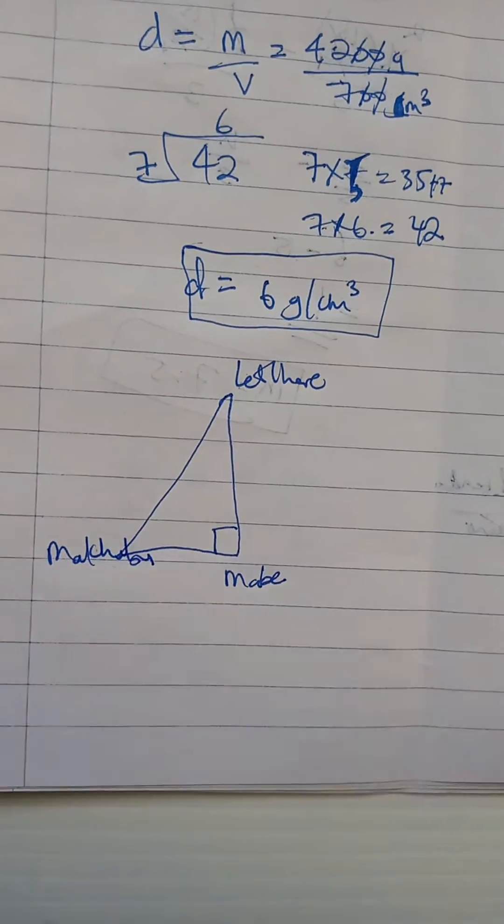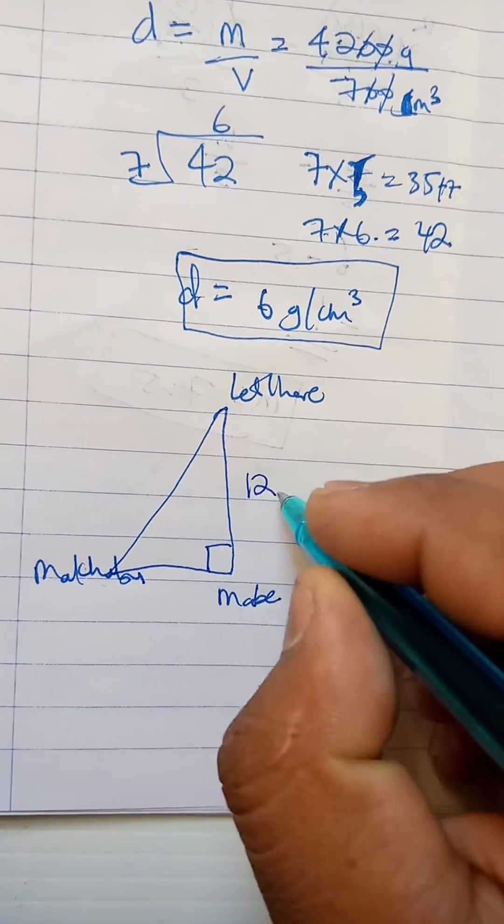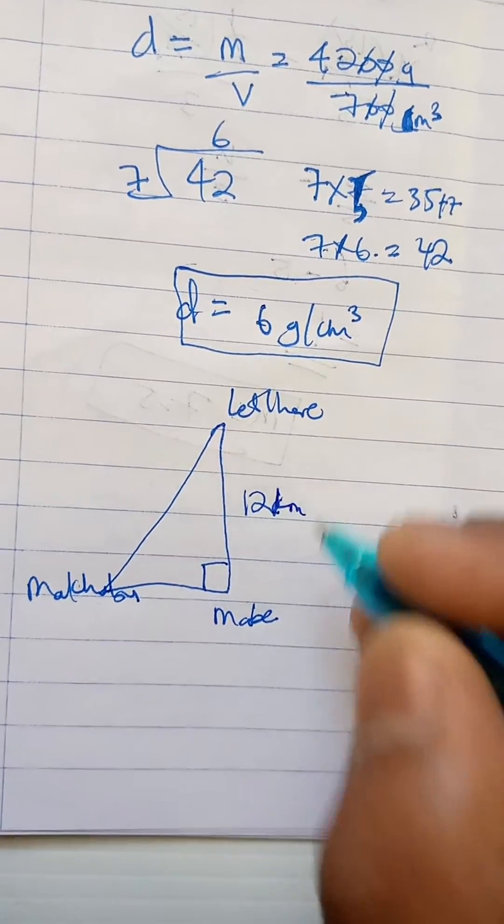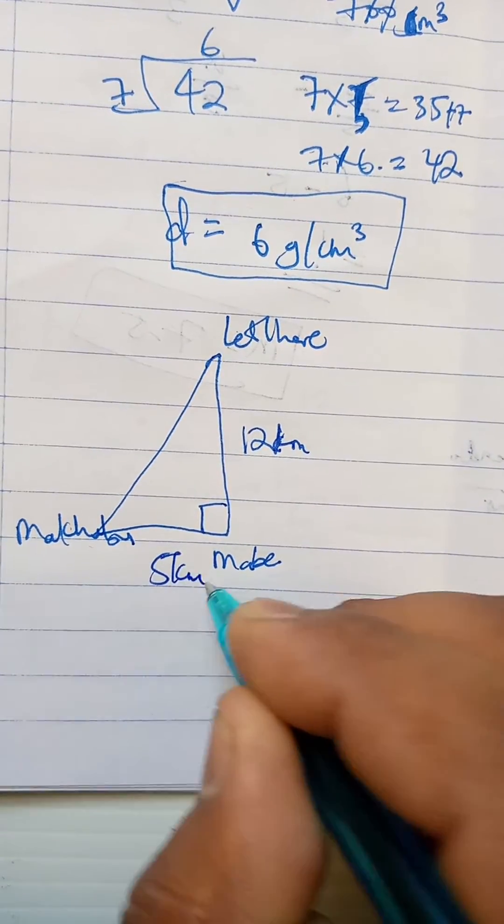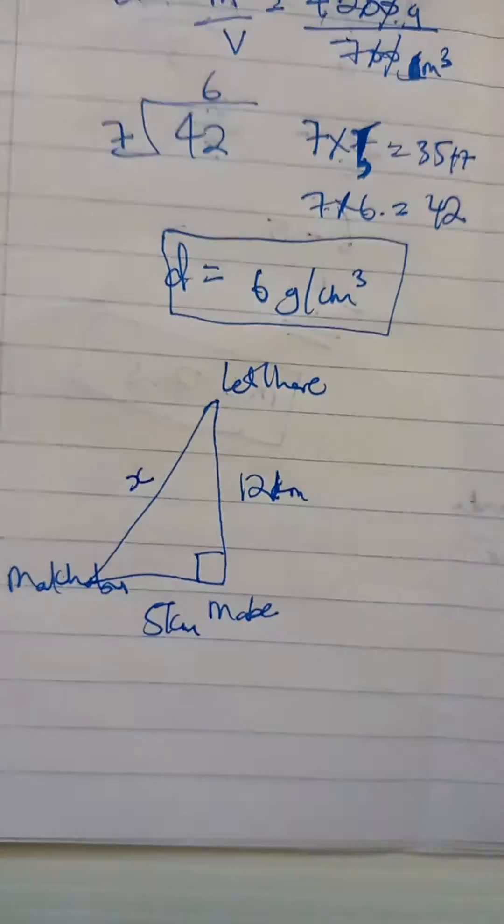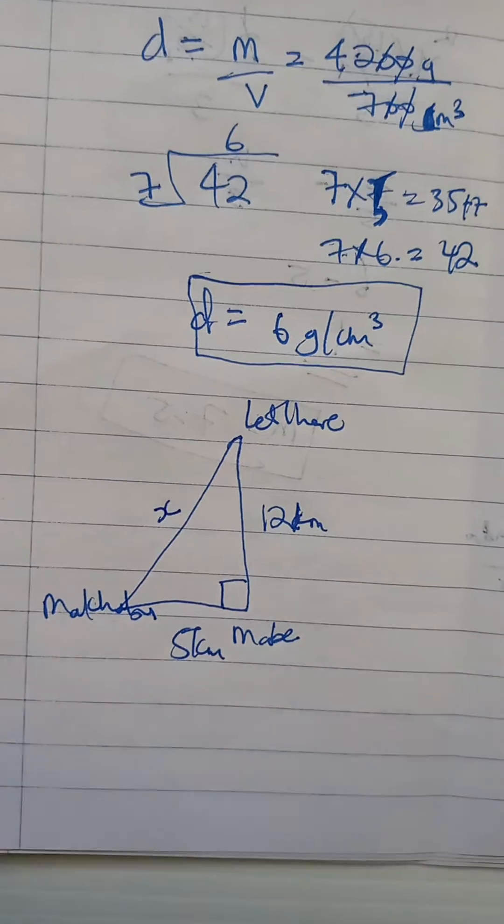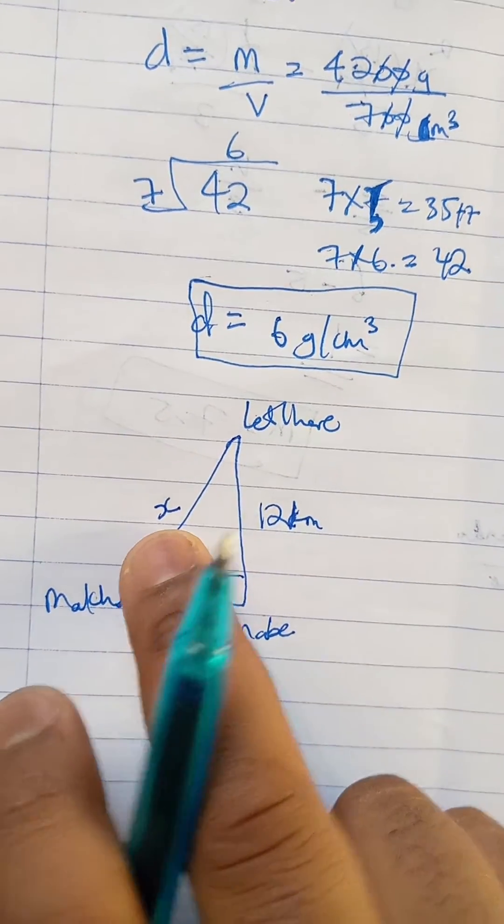They are saying the distance between Little Haru and Mabe is 12 kilometers, and then the distance between Makubu and Mabe is 5 kilometers. Now we have to find the distance between Makubu and Little Haru, right?